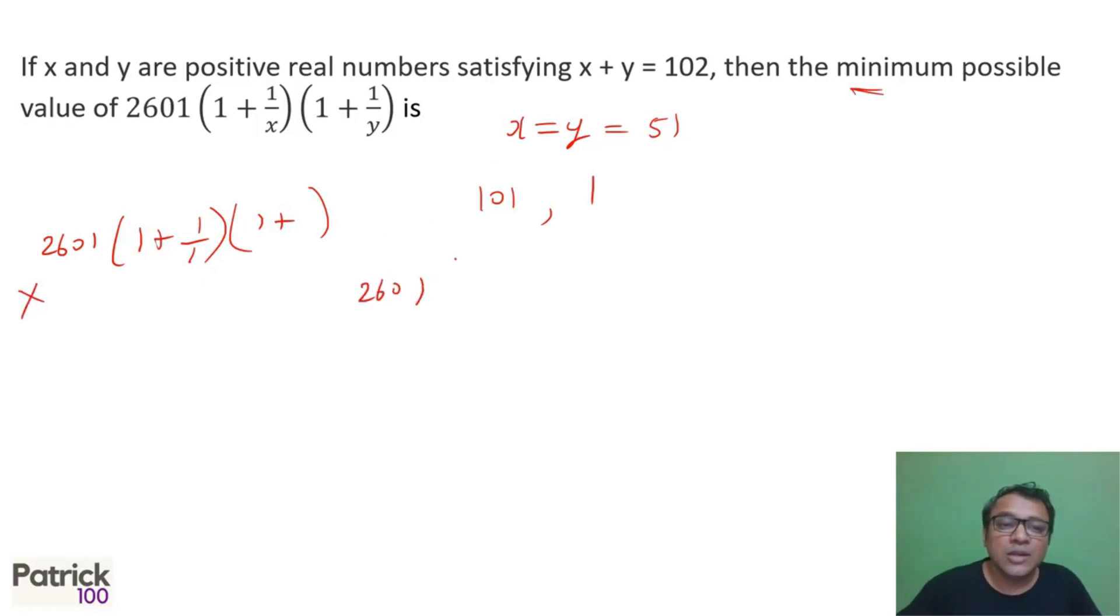2601 into 1 plus 1 upon 51 and 1 plus 1 upon 51, which is the number 2601, 52 upon 51 and 52 upon 51. Now, 51 square is 2601. So it gets cancelled off. So answer is 52 square, which is 2704.